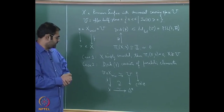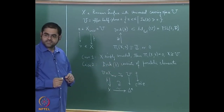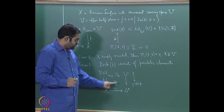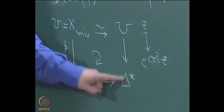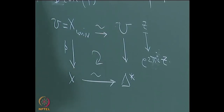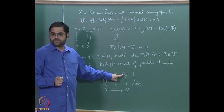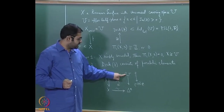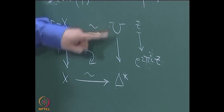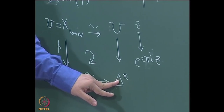So if the deck transformation group contains only parabolic elements, the covering is identified with U → Δ*, and the deck transformation group corresponds to the subgroup of translations by a single non-zero integer — namely 1. Thus Δ* is just U mod ℤ, and π₁(Δ*) ≅ ℤ.